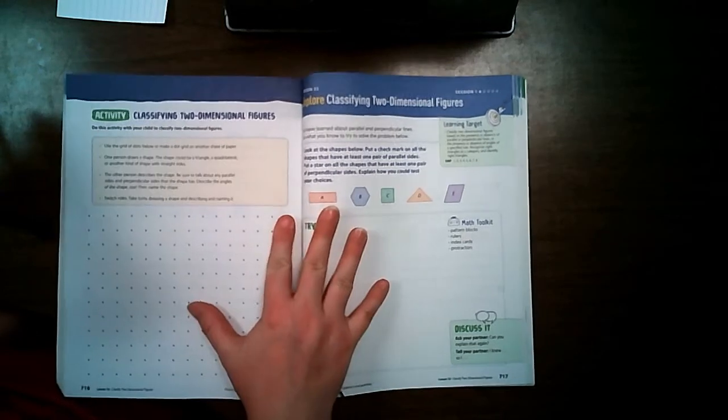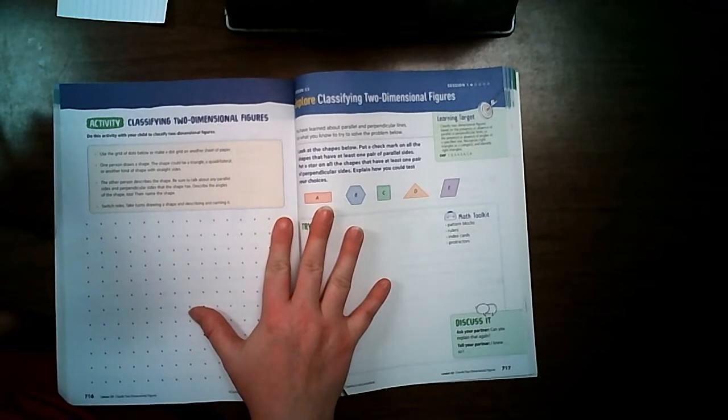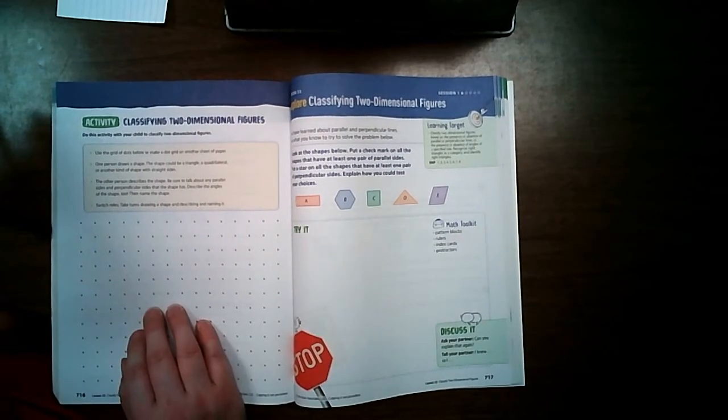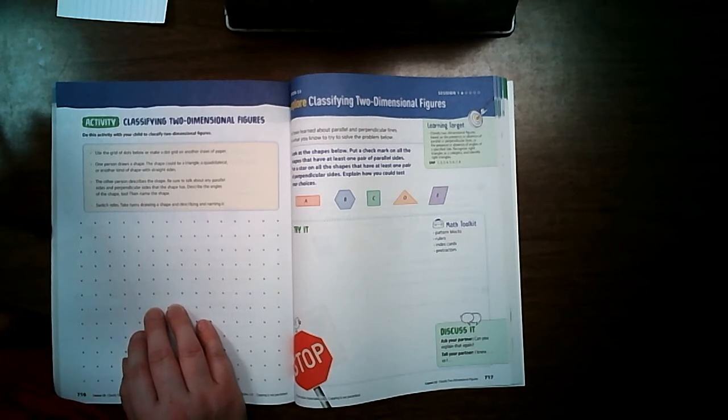Hi students, this is Lesson 33, Session 1, Classifying Two-Dimensional Figures. We're on page 717 in your volume 2 math book.